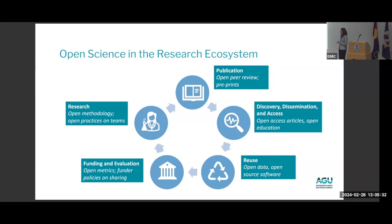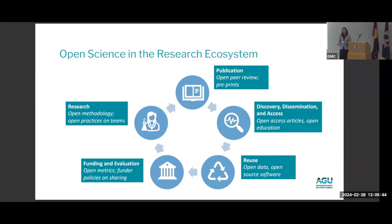No discussion of open science is complete without a discussion of funding and evaluation. We hear a lot from people about evaluation — they need to know how open science can benefit their career because they're being evaluated and have to make targets that are all publication-based or citation-based, or their H-index needs to grow. So open science also incorporates more open methods of evaluation, open metrics, and funder policies on data and software sharing.